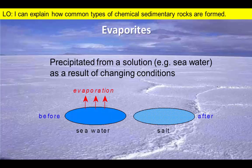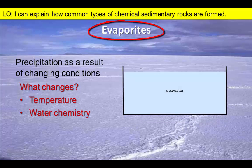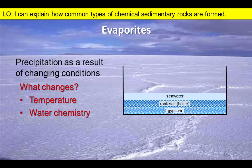Because these chemical sedimentary rocks form by evaporation, they're known as evaporites. As sea water evaporates, the concentration of salts changes and different rocks are formed. Gypsum will precipitate first, followed by rock salt as salt concentrations increase in the shrinking water body.